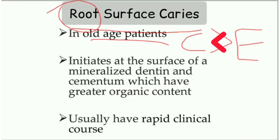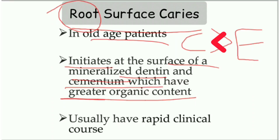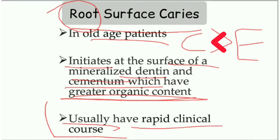Because cementum is less mineralized, plaque accumulation will be more, caries exposure will be more, and caries progression will be faster compared to enamel caries. Root surface caries initiates at the surface of mineralized dentine or cementum, which has a greater organic content. That is why it progresses faster and demineralizes faster, and usually has a rapid clinical course compared to enamel caries.